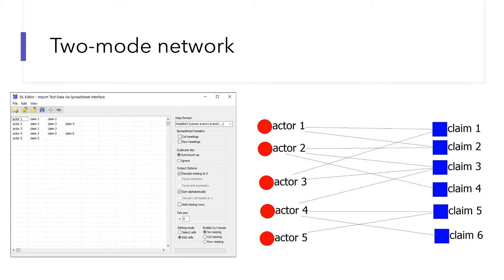Policy actors could be legislators, interest groups, government agencies, businesses, academics, and community groups. The rest of the columns represent the claims. A claim is a verbal or written expression that is in favor of or against a policy.